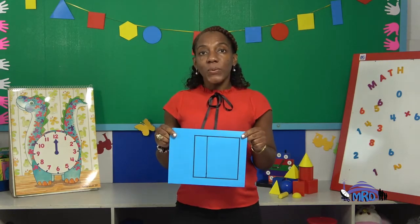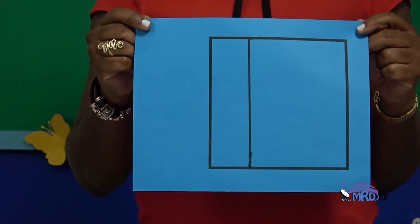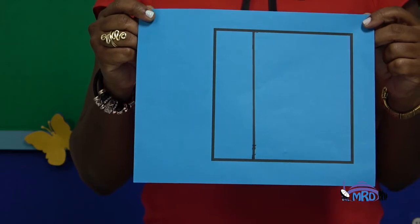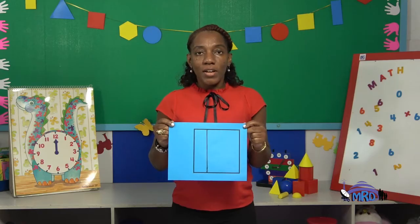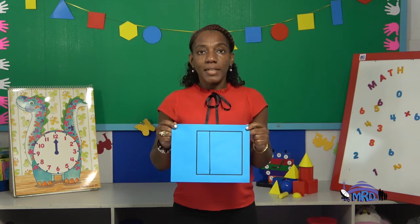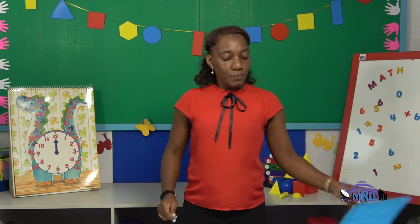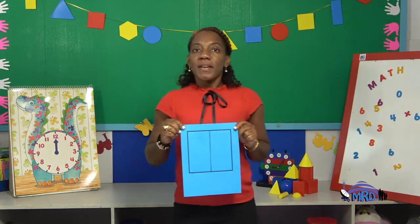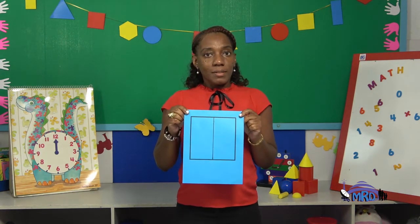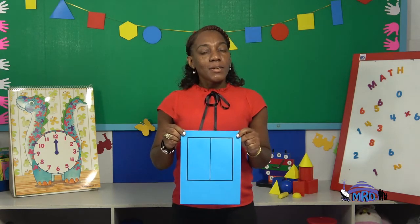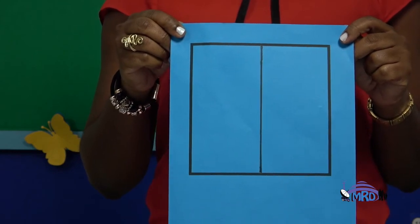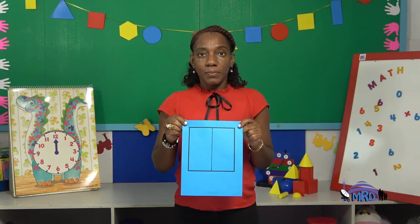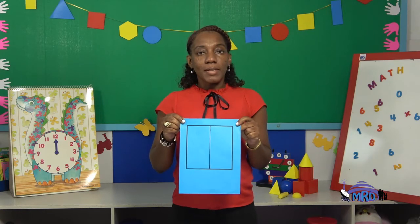Now I have a square. Are both parts of this square the same? Take your time. Are both parts equal? No, they aren't. So this square is not divided into half. I have another square — this is our final shape. Look at it carefully. Are both parts the same? Both parts are the same. This square is divided into half.